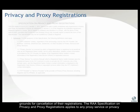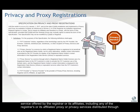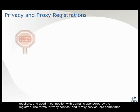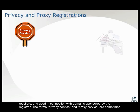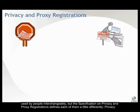The RAA specification on privacy and proxy registrations applies to any proxy service or privacy service offered by the registrar or its affiliates, including any of the registrar's or its affiliates' proxy or privacy services distributed through resellers and used in connection with domains sponsored by the registrar. The terms privacy service and proxy service are sometimes used interchangeably, but the specification defines each of them a little differently.